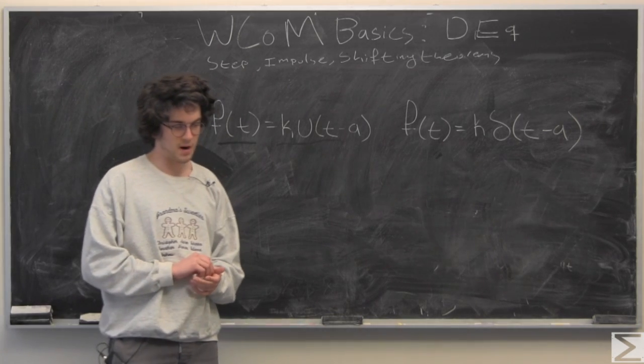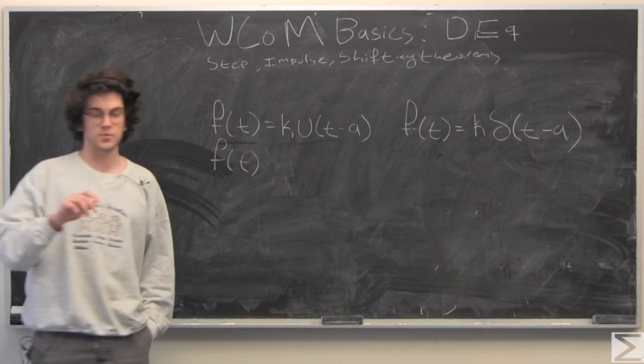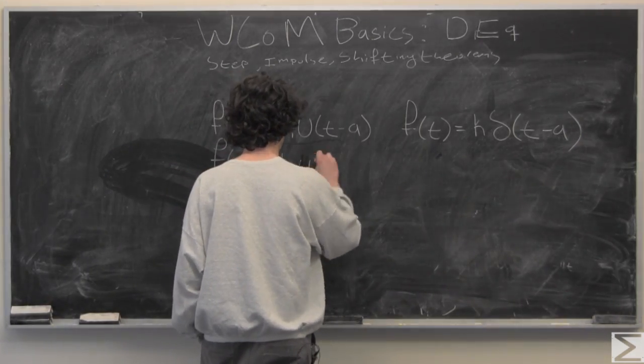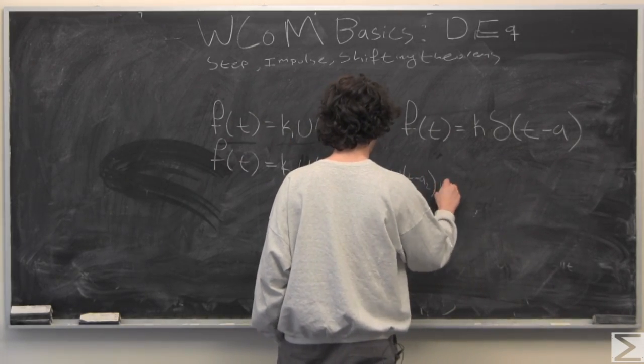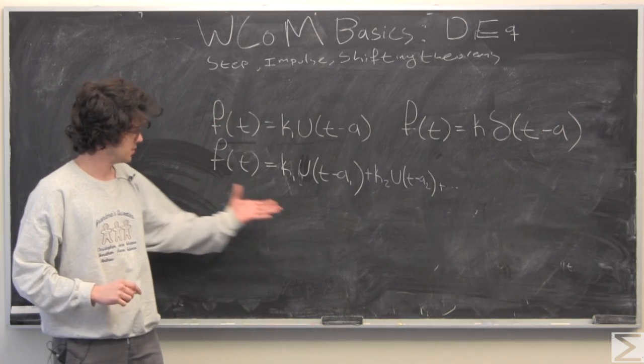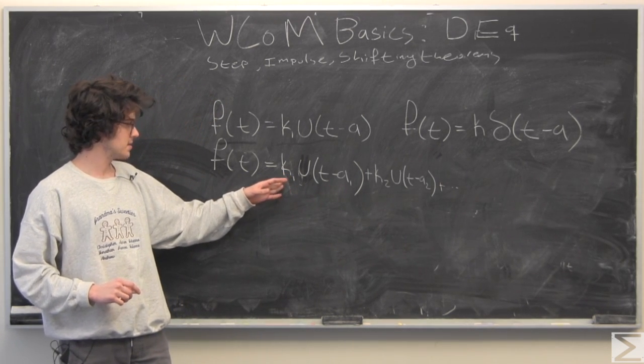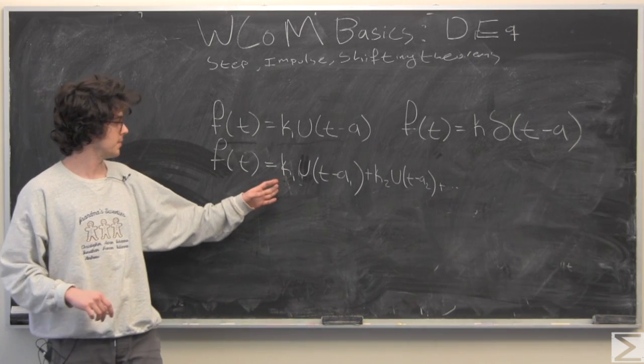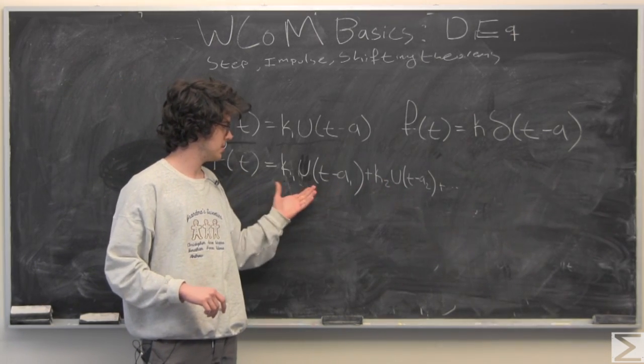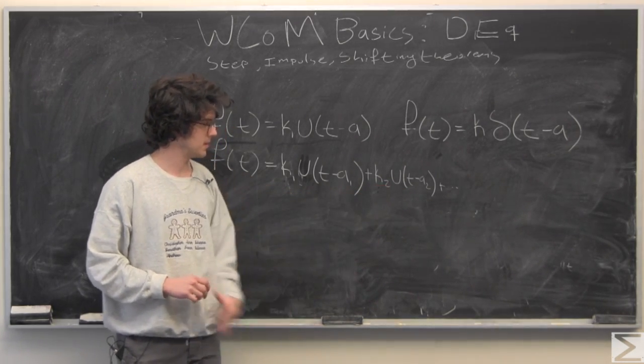This can also be combined. For example, you could have multiple different steps in your function. In this case, your function is going to be zero up until a1, at which point it's going to become k1. And then from a1 to a2, it's going to be k1, and then at a2, the function is going to become k2.